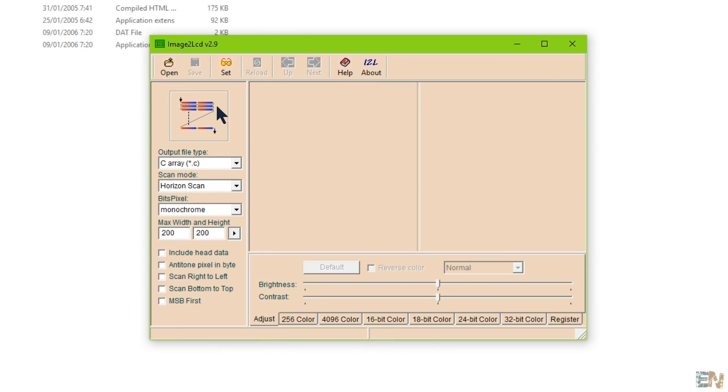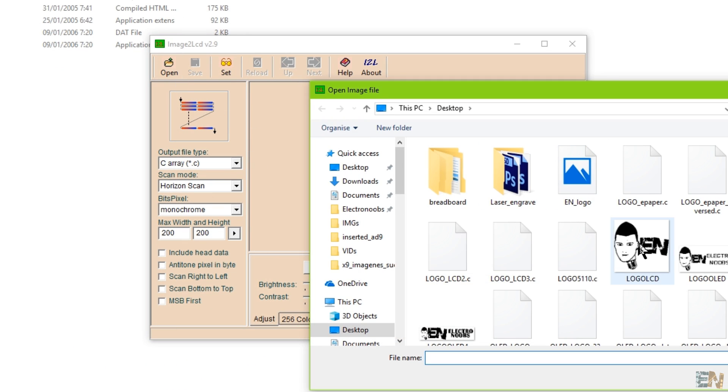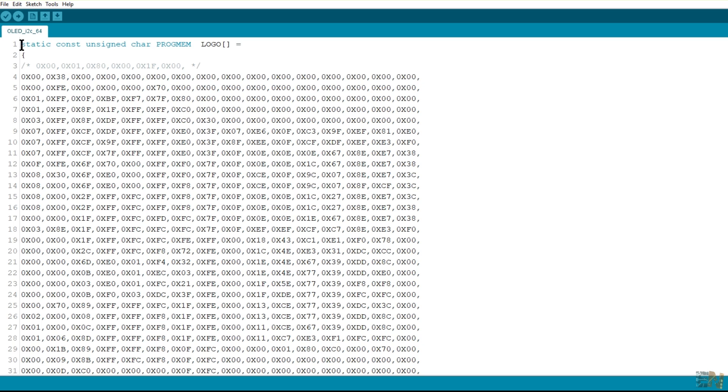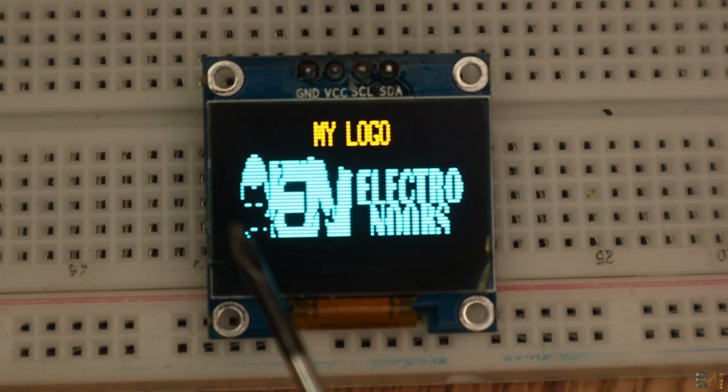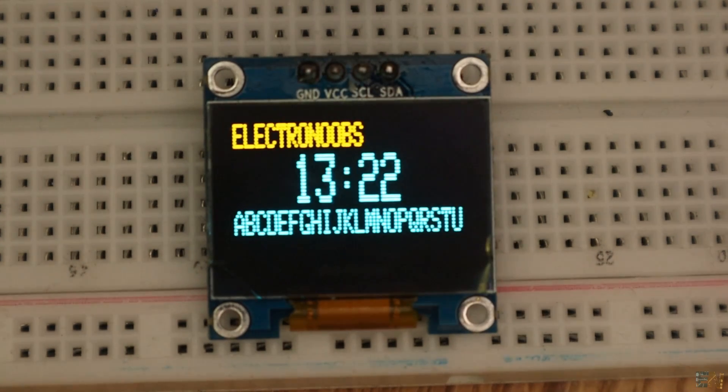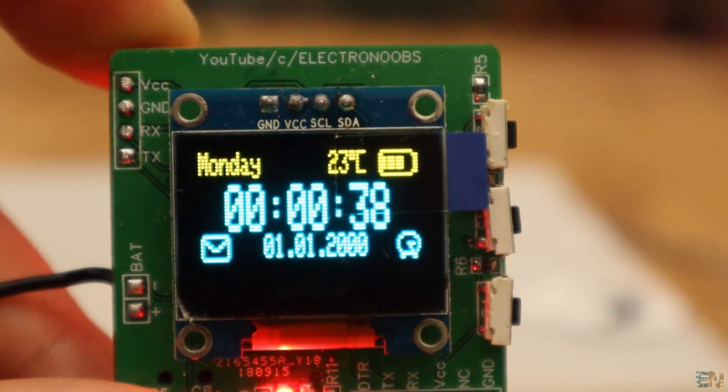On my webpage Electronoobs.com, you will also find this image to LCD program that will pass a BMP format picture to hexadecimal data for the LCD so you could create your own unique logos like this one I did here. The code is the same for both sizes of the OLED screen.